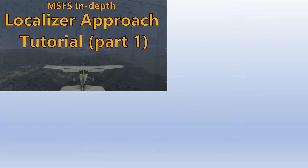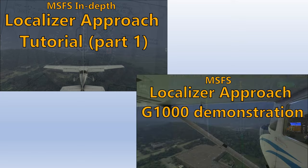In video 1 of this lesson series we talked about what a localizer approach is and the basic theory of how to fly one. If you haven't already, you'll want to watch that video before you watch this one. You can find it linked here and in this video's description. In the second video we demonstrated flying a localizer approach using the G1000 equipped Cessna 172, also linked in the description.